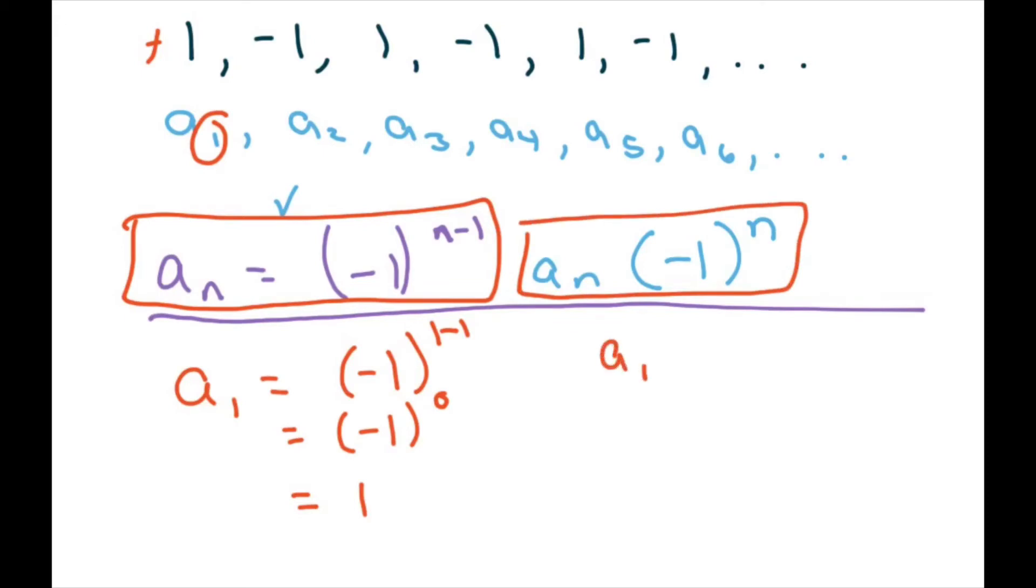So if I had a sub one, I would write negative one to the first power, where negative one to the first power is negative one. If you did two, a sub two, you would get negative one squared, which is positive one. So if you want to start negative, you'd use this one and start positive, use this one.